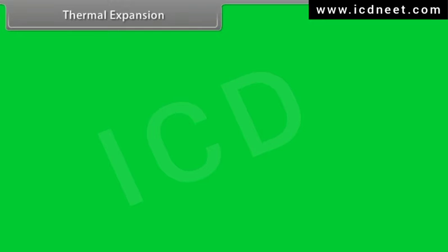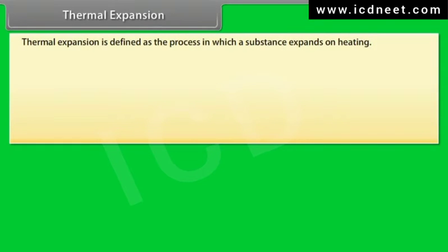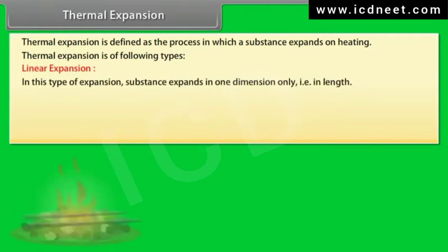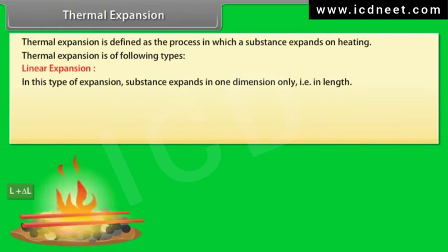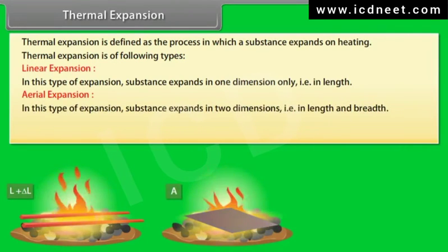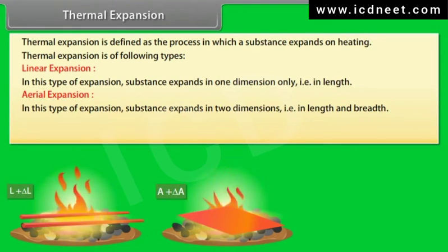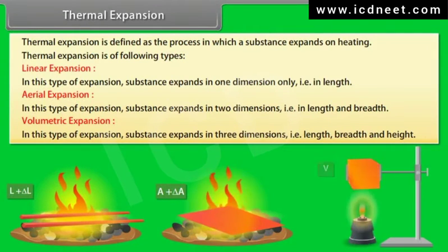Thermal expansion is defined as the process in which a substance expands on heating. Thermal expansion is of three types: Number 1, linear expansion — the substance expands in one dimension only, that is in length. Number 2, aerial expansion — the substance expands in two dimensions, that is in length and breadth. Number 3, volumetric expansion — the substance expands in three dimensions, that is in length, breadth and height.